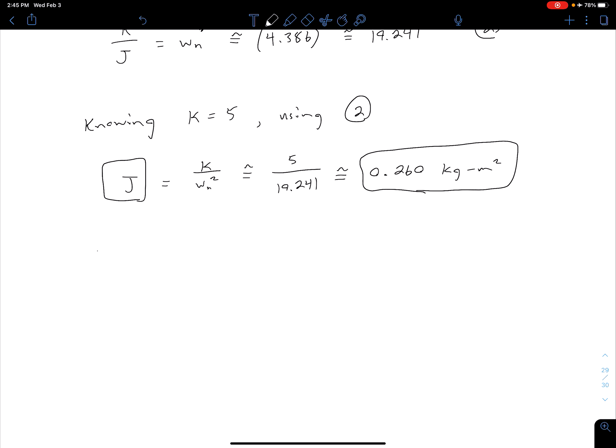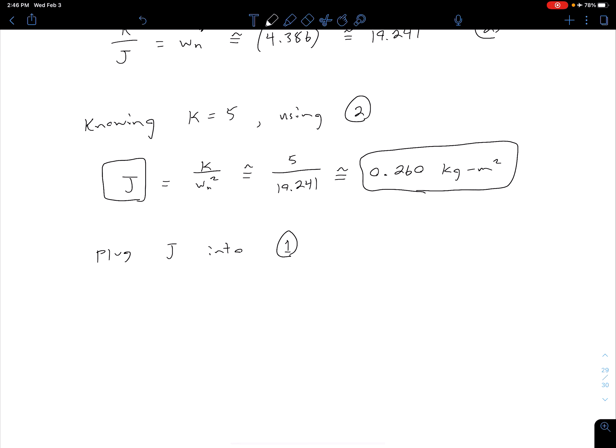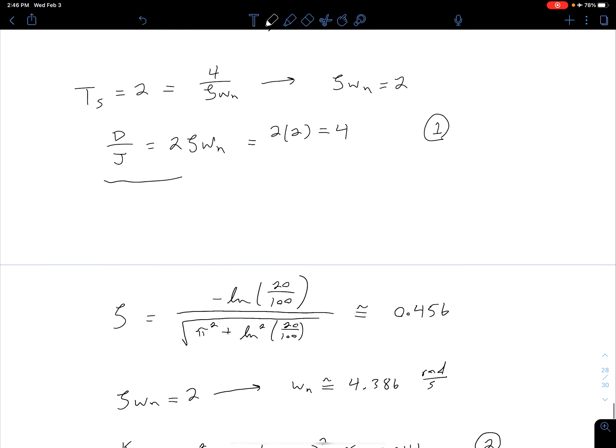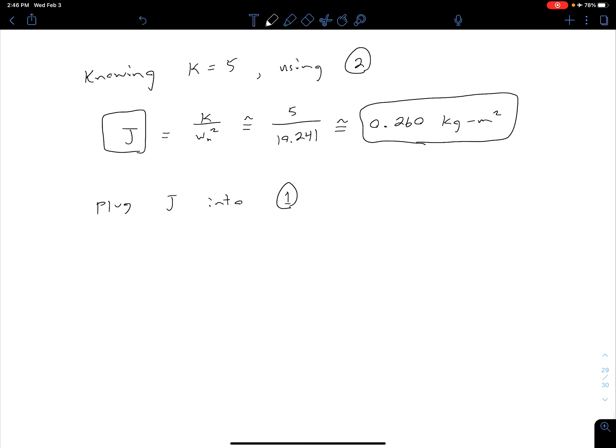So now that we know the J we can plug the J into equation 1. We see our equation 1 is relating D and J. From that we can say D is equal to 4 times J so that is approximately 4 times 0.260 and we get that D is approximately 1.039 and units of that are newton meter seconds per radian.